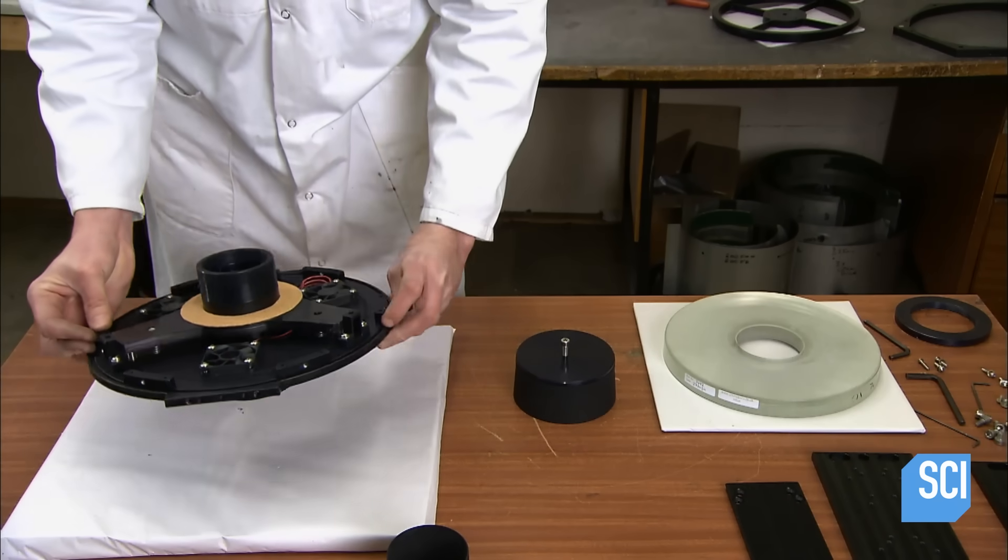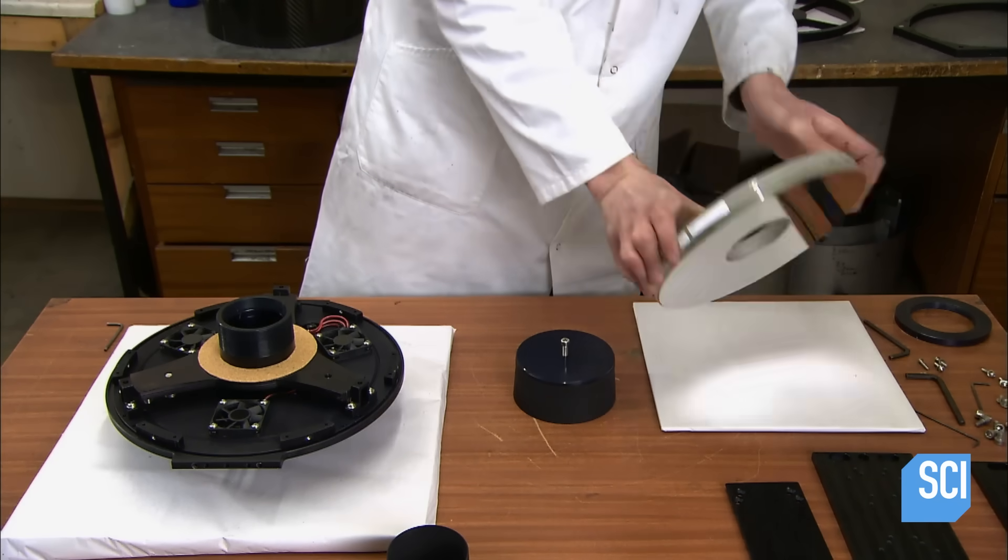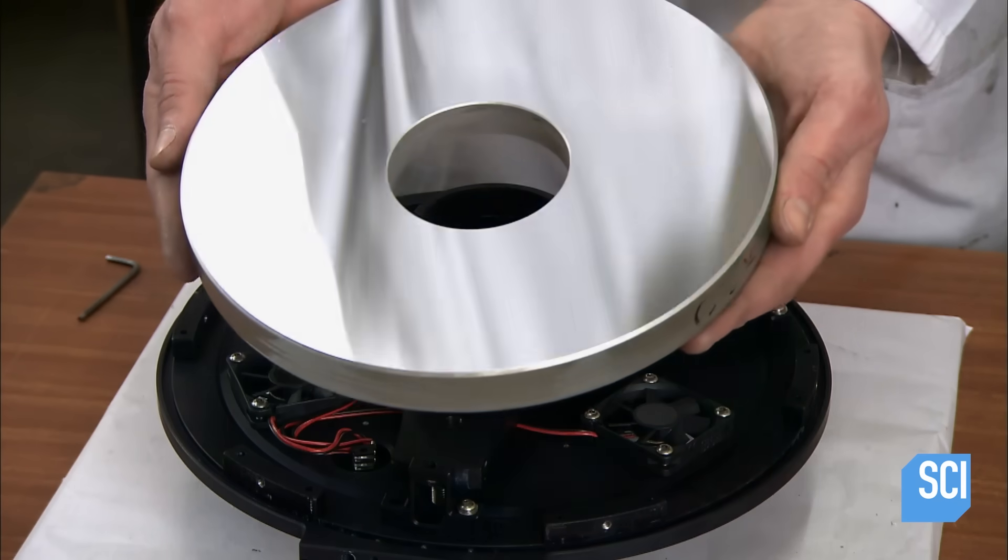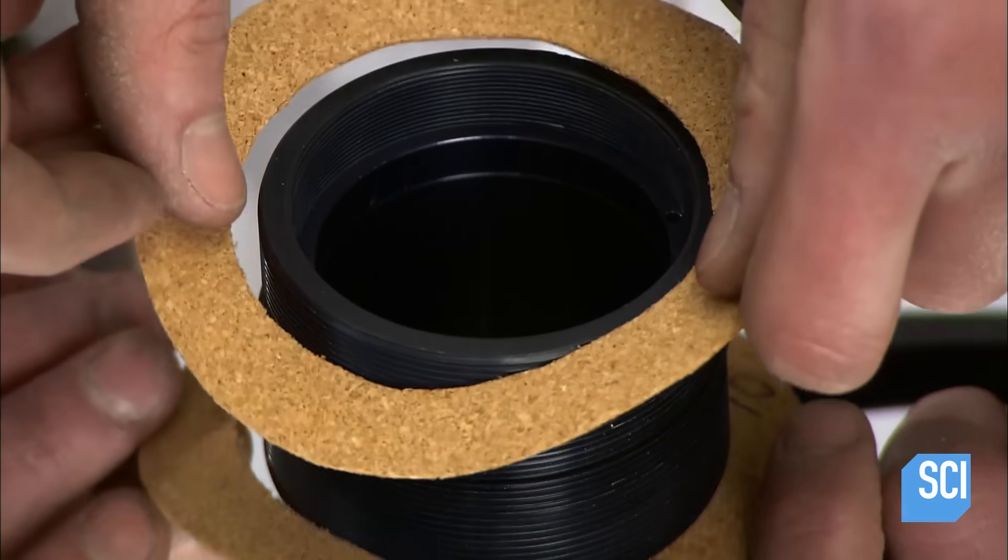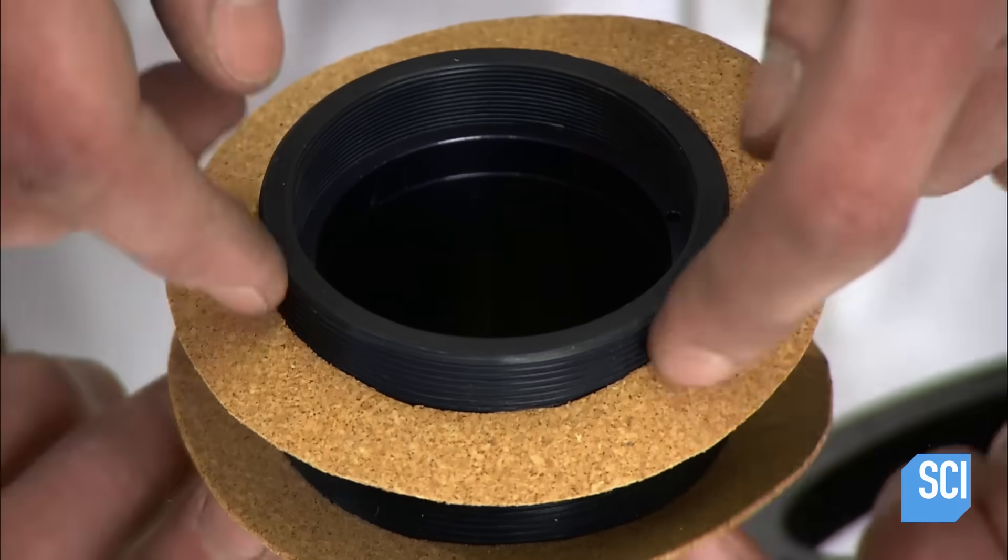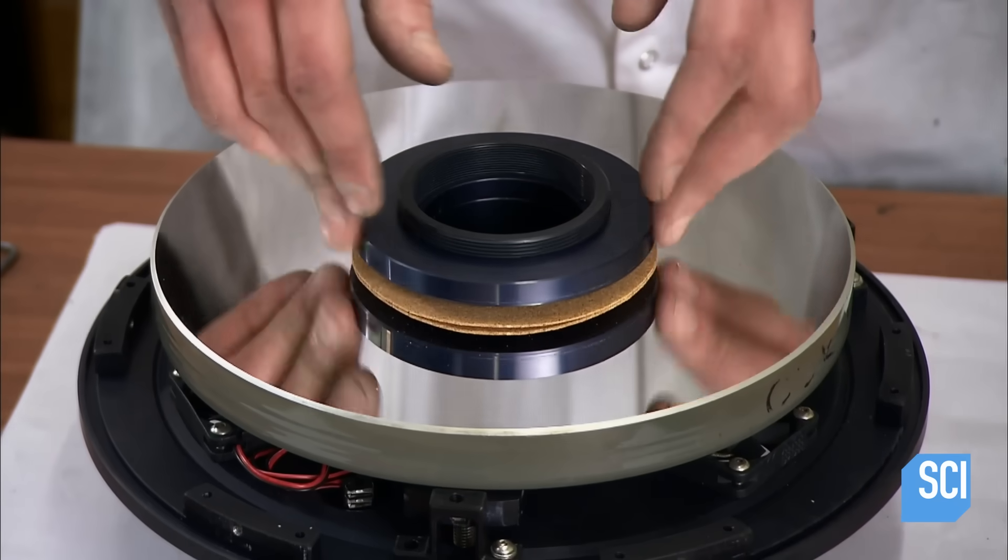He flips over the assembly and slides that precision-made mirror onto the housing. A cork ring cushions the mirror so a retaining ring can be installed without a scratch. The telescope's primary mirror is now secured to the housing.